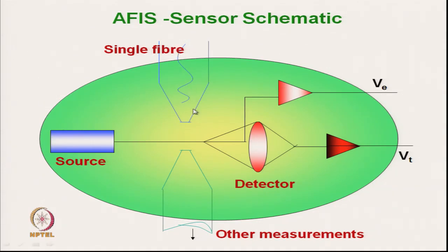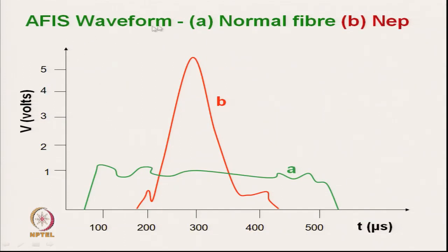Considering that fibres are not crimped, we get the AFIS signal. A normal fibre produces a normal waveform, while fibres in nep form produce a distinct peak. From the number of these peaks we can get the nep content.